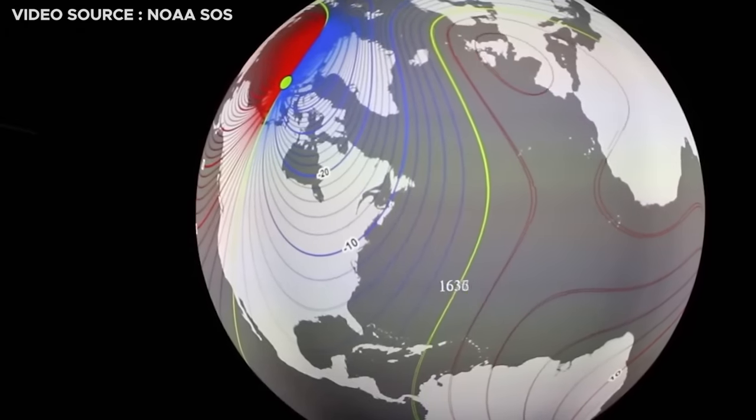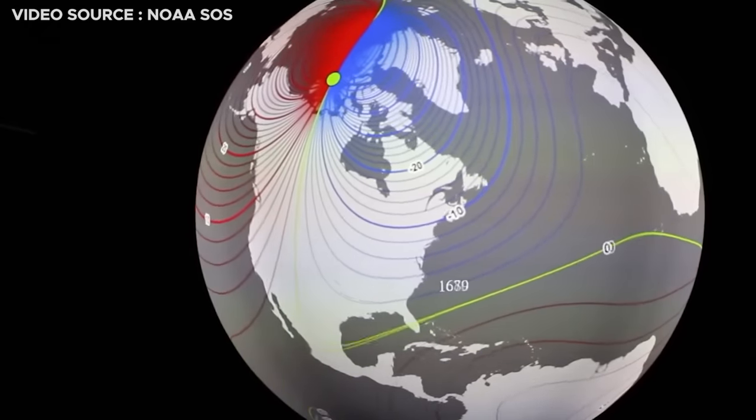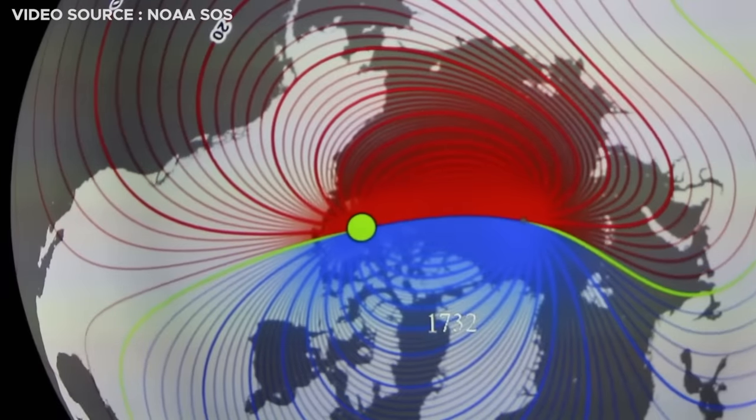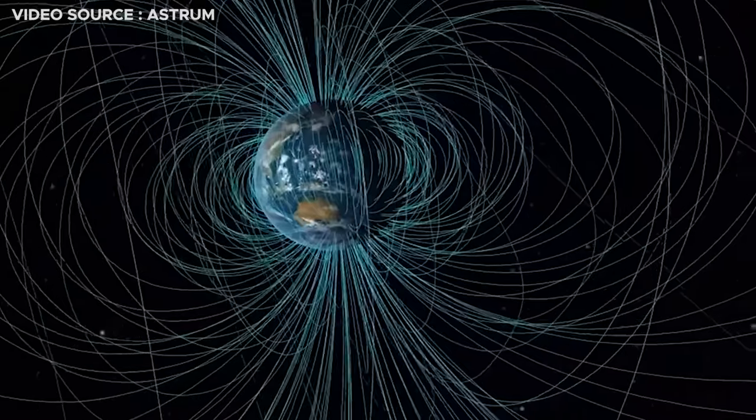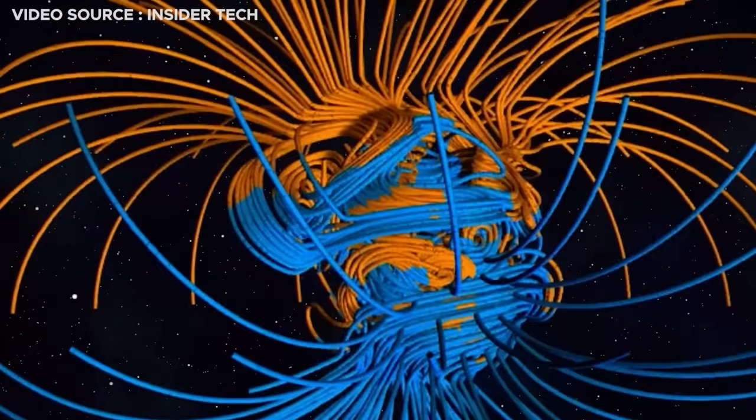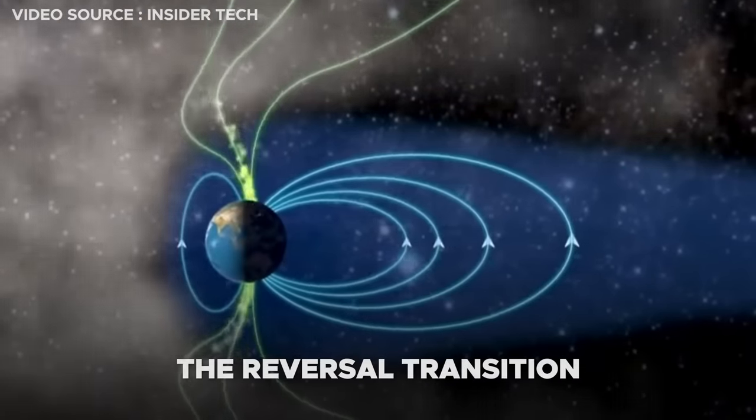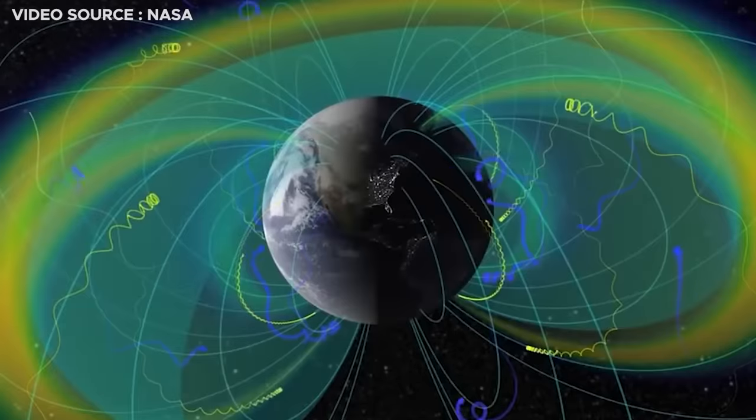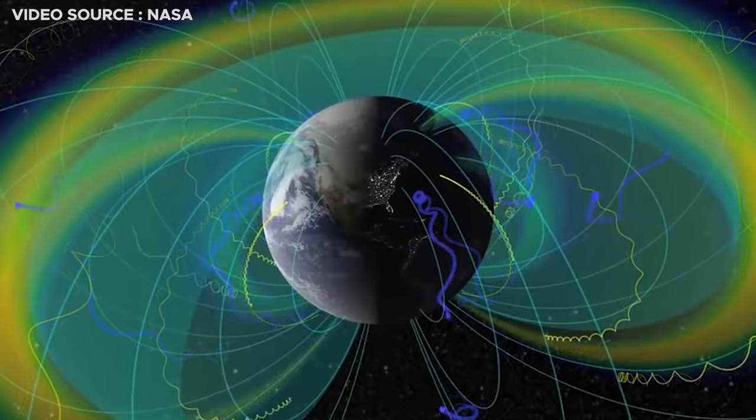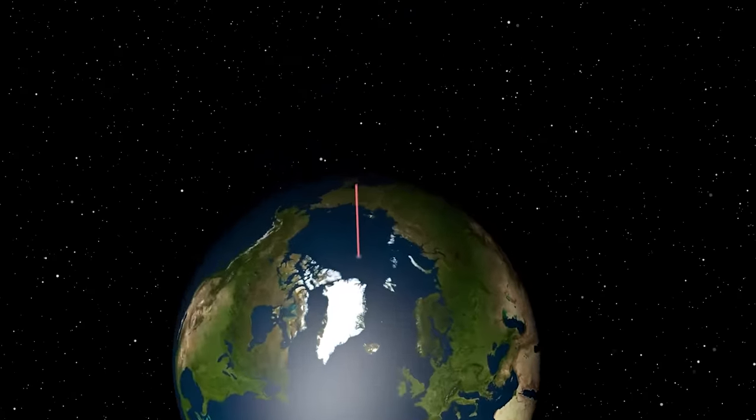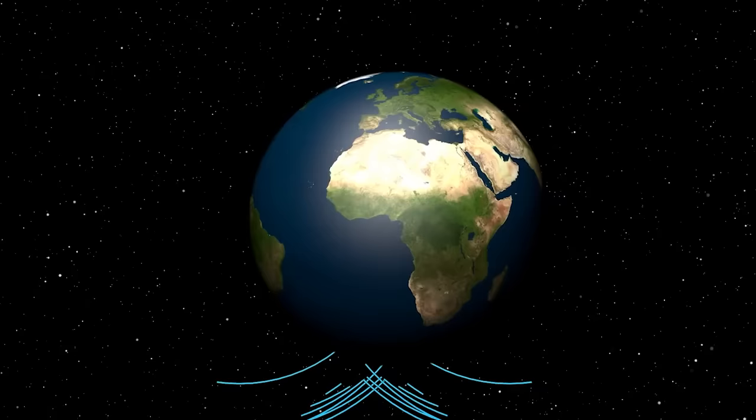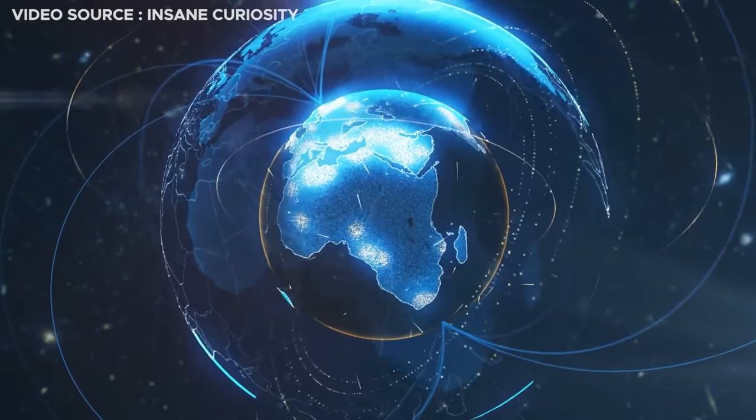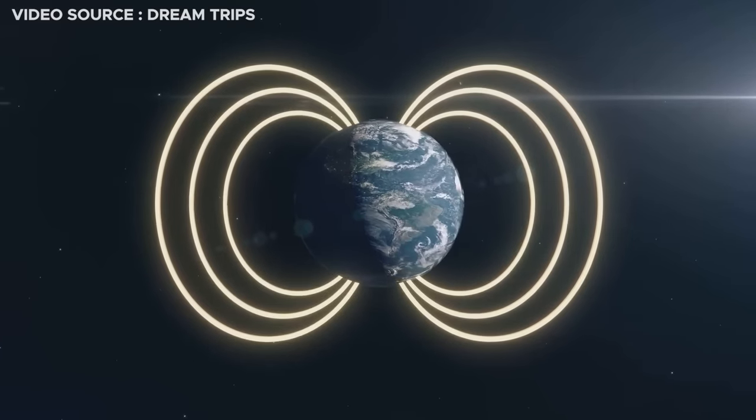During a reversal, the magnetic field does not simply switch off and then on with opposite polarity. Instead, the field becomes weaker and more disordered, with multiple North and South poles emerging at various locations around the planet. This phase of a weak and chaotic magnetic field is known as the reversal transition. As the new polarity strengthens over time during a geomagnetic reversal, the multiple poles that initially emerged gradually diminish. Eventually, the Earth is left with a single dominant magnetic North and South pole, but in the opposite orientation to what existed before the reversal. This gradual transition results in a re-established, yet inverted magnetic field configuration on the planet.